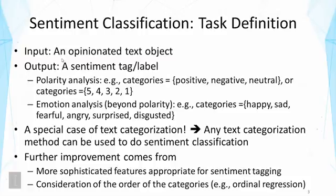As you can see, the task is essentially a classification or categorization task — it is a special case of text categorization. This means any text categorization method can be used to do sentiment classification. However, if you just do that, the accuracy may not be good, because sentiment classification requires two kinds of improvements over simple text categorization. One is to use more sophisticated features appropriate for sentiment tagging. The other is to consider the order of categories, especially in polarity analysis where an ordering exists and ordinal regression can be applied.